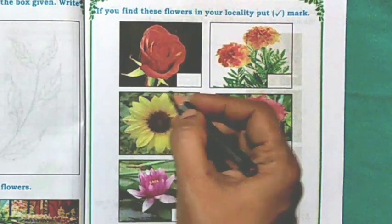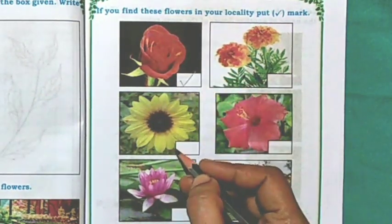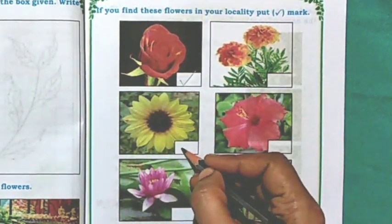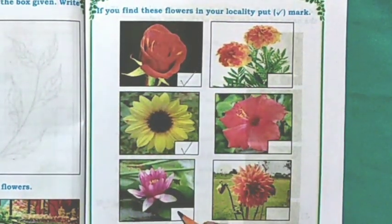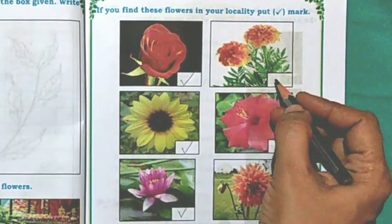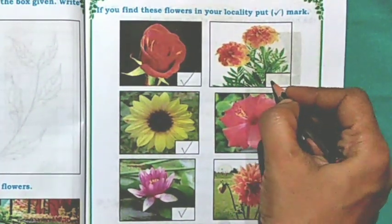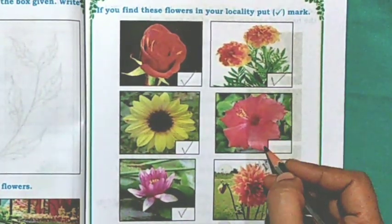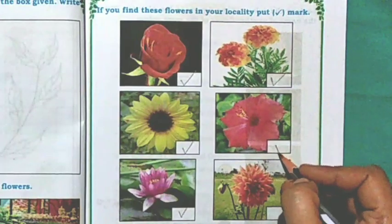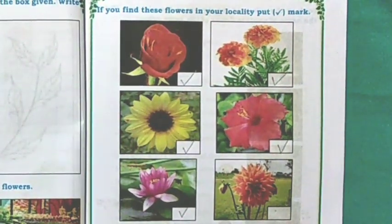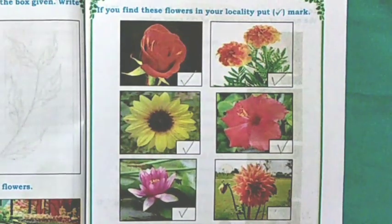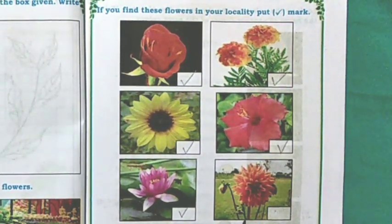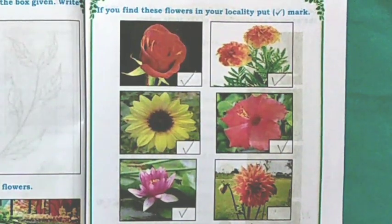Rose. Sunflower. Lotus. Marigold. Hibiscus. I am not sure whether I have seen this flower, so I am not going to give a tick mark. If you have seen it, give a tick mark.